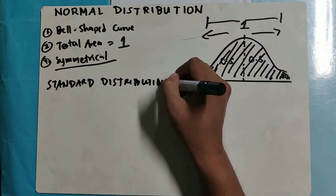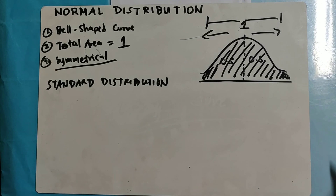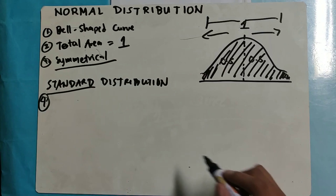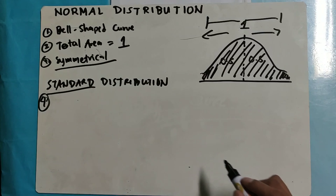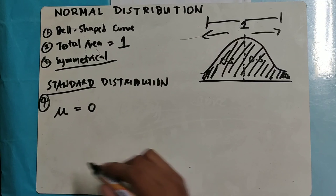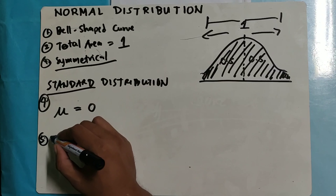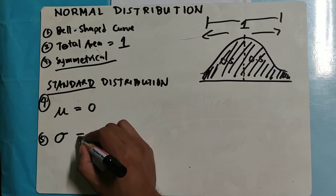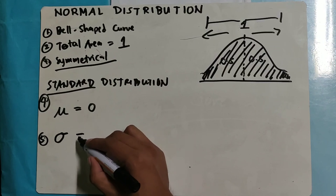So these are the three things that come in our mind when we talk about normal distribution. First, we have the bell-shaped curve. Second, the total area underneath this bell-shaped curve is 1. And third, it is symmetrical. Now let's proceed to the standard normal distribution.